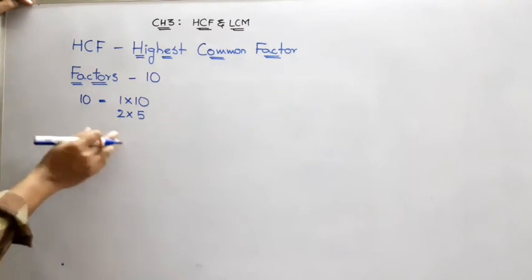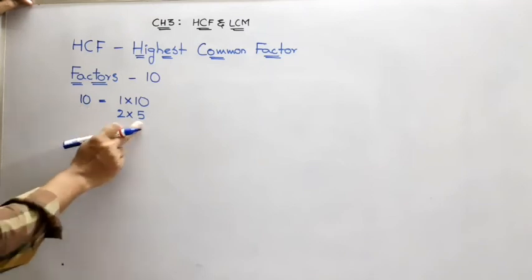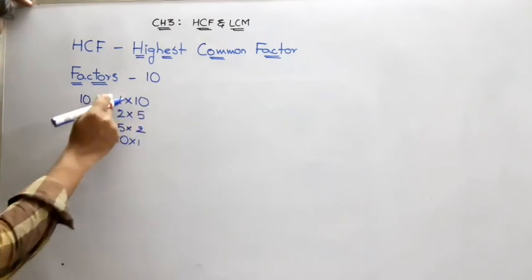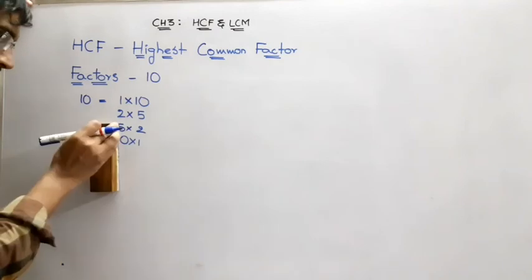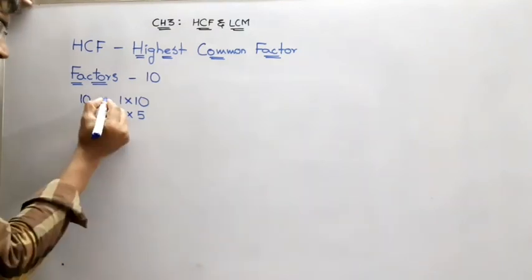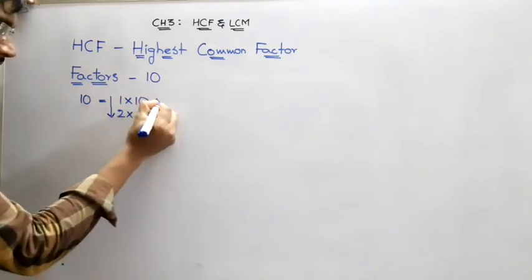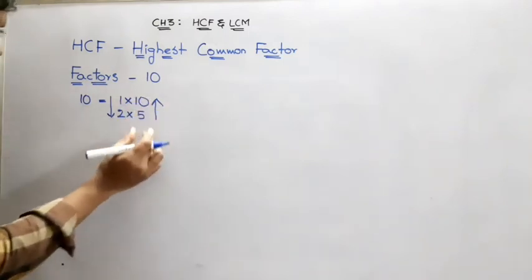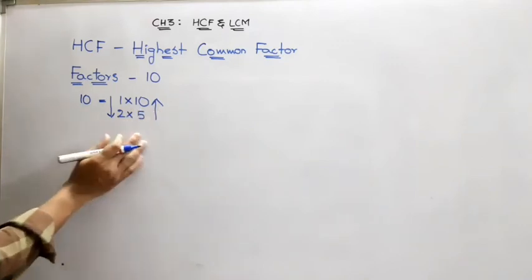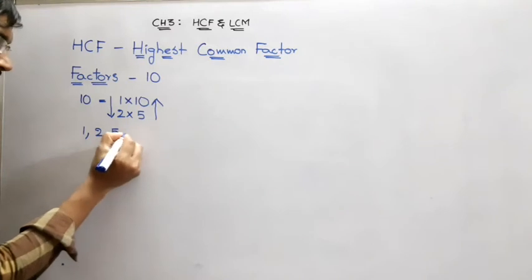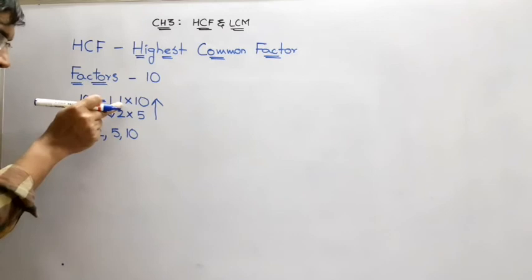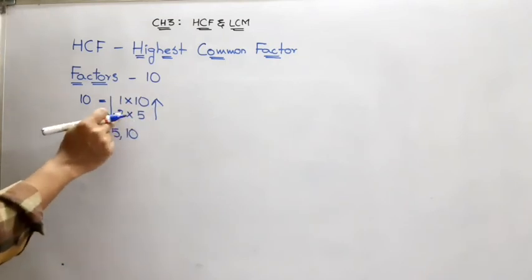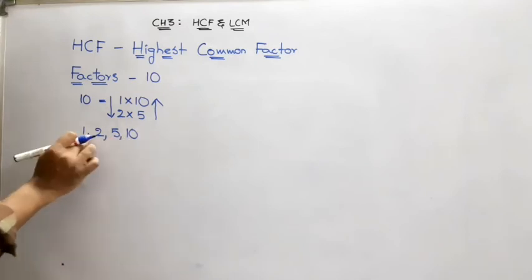After 2, in the 3 table we can't see 10, in the 4 table we can't see 10. Then 5 table and 10 table would come, but 5×2 and 10×1 are already available in this multiplication system. So instead of writing or repeating them again, we use a down arrow to indicate these numbers as factors, and the upper right-side numbers are also considered as factors.